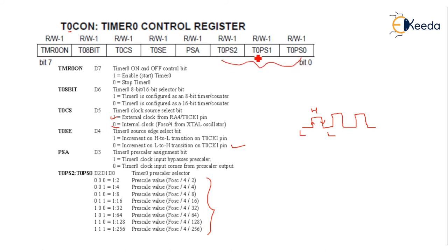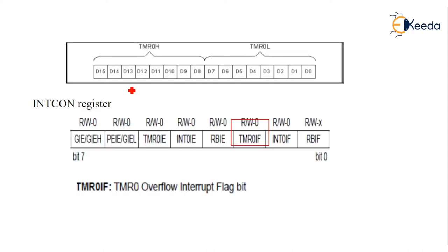Those 3 bits are T0PS2, T0PS1, and T0PS0 — Prescaler bits 2, 1, and 0. Then there are two more registers: TMR0H and TMR0L. If you go for 16-bit mode, the 16-bit value is divided into two 8-bit registers, since SFRs are 8-bit. The lower 8 bits are stored in TMR0L and the higher 8 bits are stored in TMR0H.